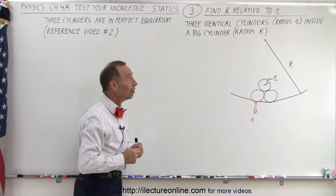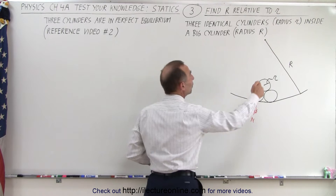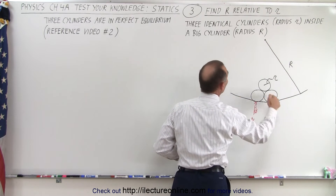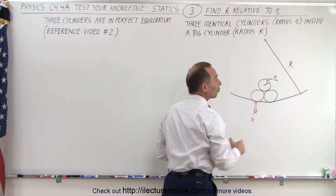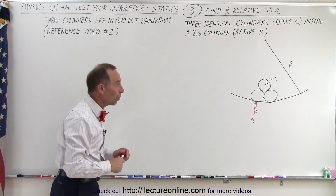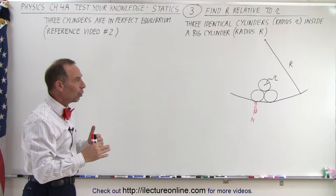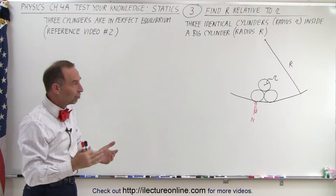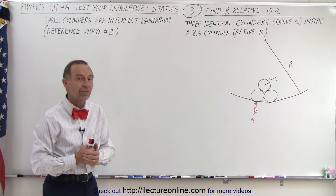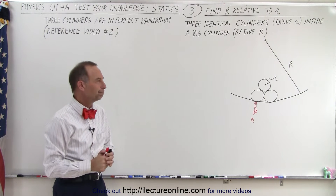Now what we're trying to do in this video is find the radius of the large cylinder relative to the radius of one of the small cylinders. They're all the same radius, small r. The relationship between big R and small r is what we're trying to find in this video. So how do we do that?